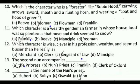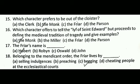Question 15: Which character prefers to be out of the cloister? The correct answer is B, that is the Monk. Question 16: Which character offers to tell the life of Saint Edward but proceeds to define the medieval tradition of tragedy and give examples? The correct answer is A, that is the Monk. Question 17: The Friar's name is dash. The correct answer is A, that is Hubert.